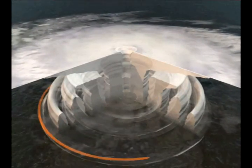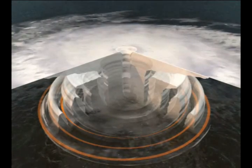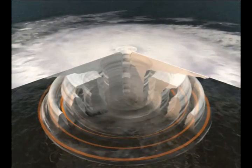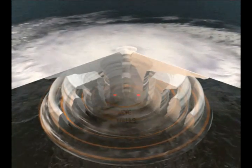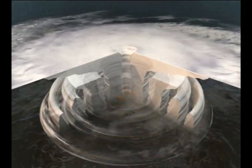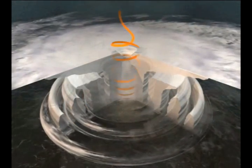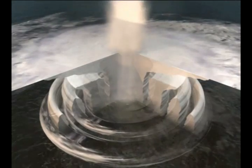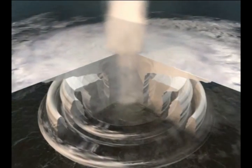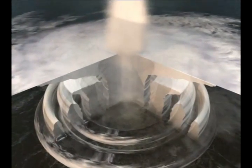High winds corkscrew in towards the center, reaching greatest speed and destructive force in the eyewall above the water's surface. Here, wind streams twist around the eyewall as they climb to the top of the storm. The airflow acts as an exhaust, enabling the wind speed to increase and the hurricane to become stronger.